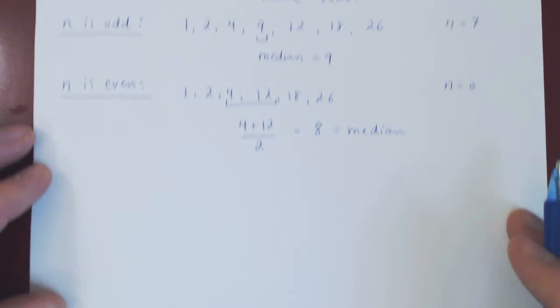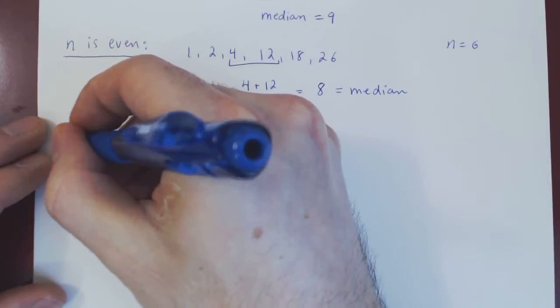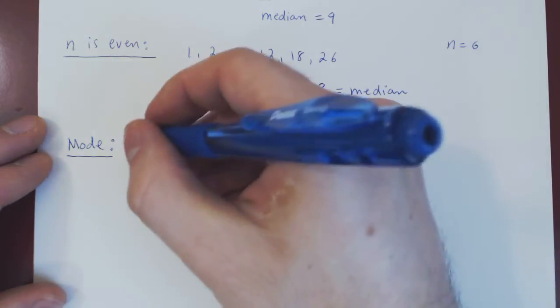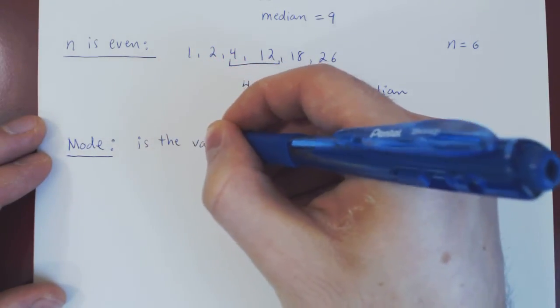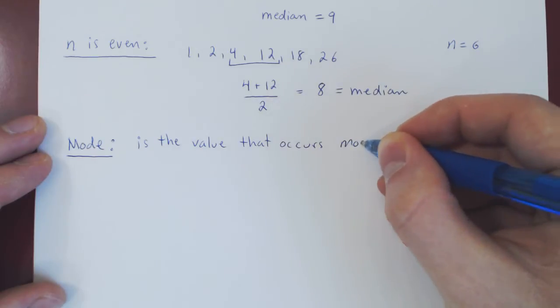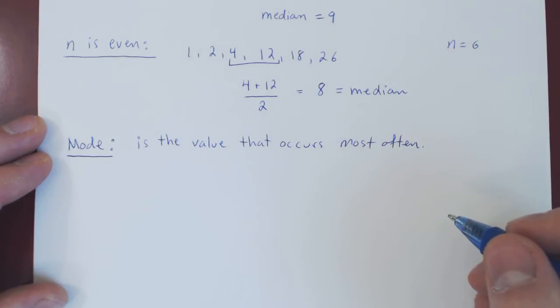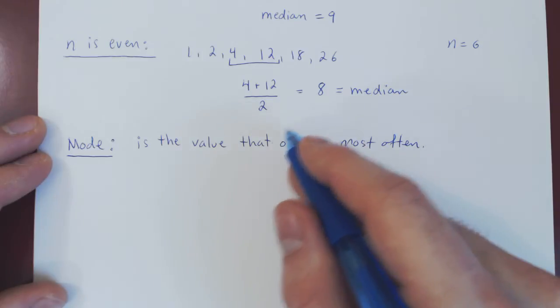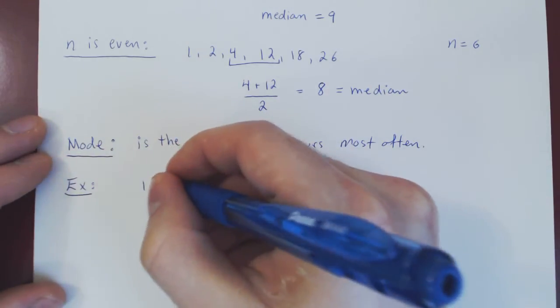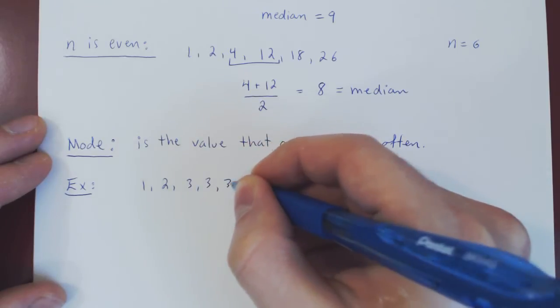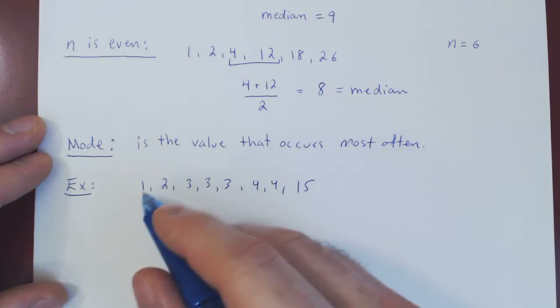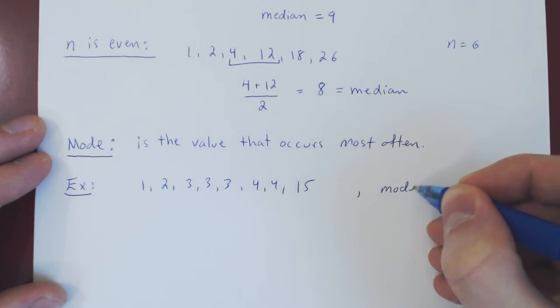The last measure of central tendency is the mode. All the mode is, is the value that occurs most often in your set of values. The mode may not exist if different values occur the same number of times. Let me give you a few examples. Suppose we had 1, 2, 3, 3, 3, 4, 4, and 15. Well clearly, the value 3 occurs three times, which is the largest number of times that a value occurs. So here, the mode would equal 3.